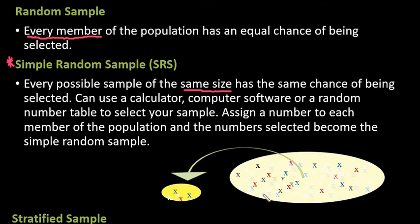So every possible sample of the same size has the same chance of being selected. So what you have is a group of people in your population, and then you're going to randomly sample a small subgroup of that larger population. Your simple random sample can be generated by using a calculator, computer software like Excel, or a random number table to select your sample. The random number table will typically only be used if you are studying statistics out of a textbook, because the random number table is not very practical in the real world.